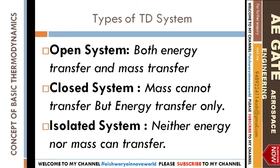A closed system — a very simple example is a pressure cooker. Say you want to boil chicken, mutton, or rice in a pressure cooker. You keep the mass constant because there is no way for mass to escape from the pressure cooker chamber. But you give heat to cook the food. So only energy transfer takes place, but there is no transfer of mass.